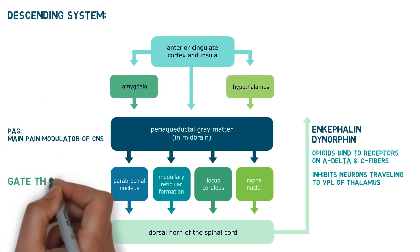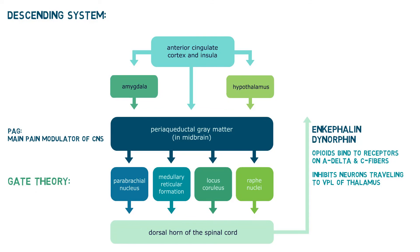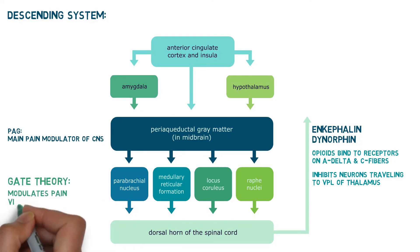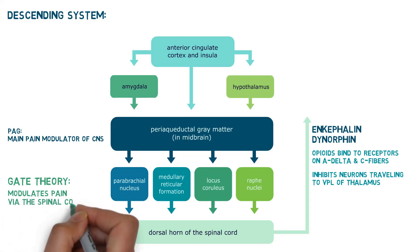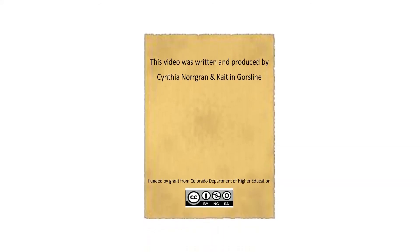Another method of pain control is the gate theory of pain. This is more fully discussed in a separate video, but it too can modulate the sensation of pain felt through modulation of the pain receptors at the level of the spinal cord. This ends the video on pain receptors.